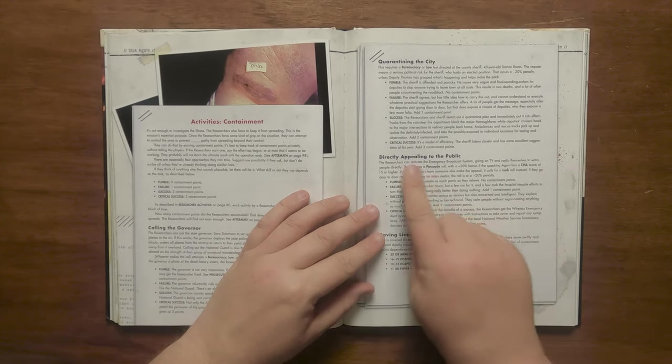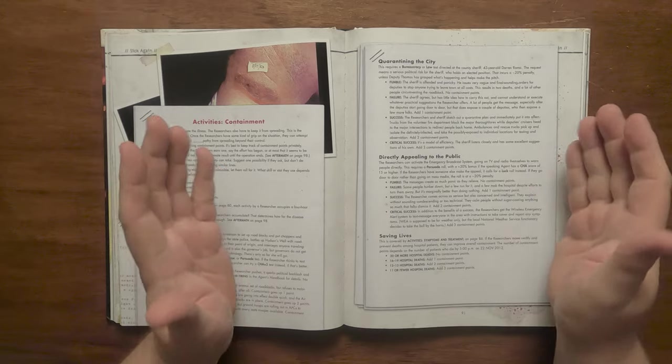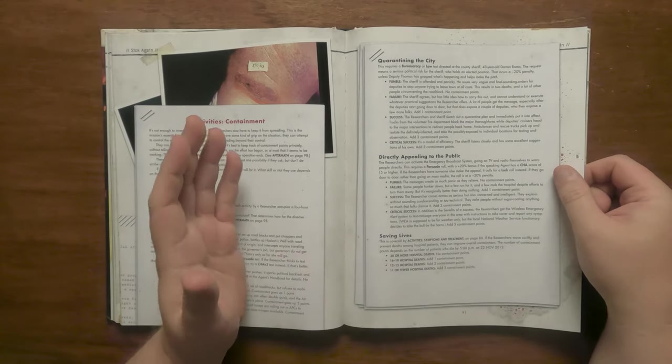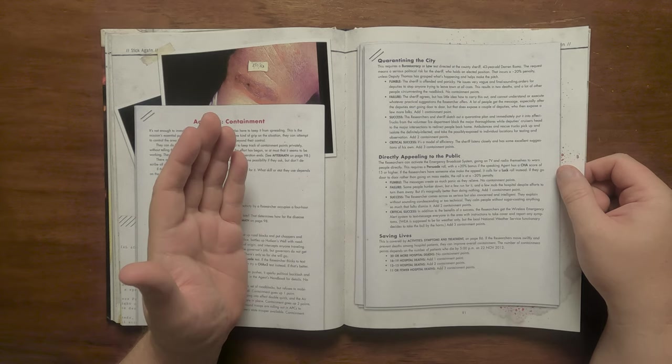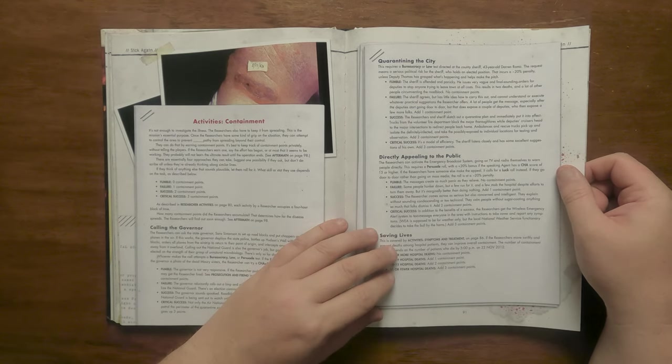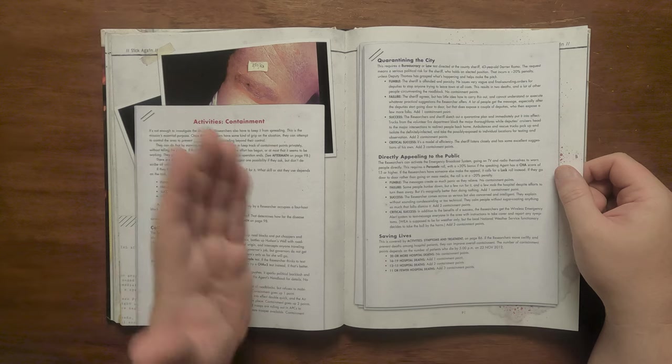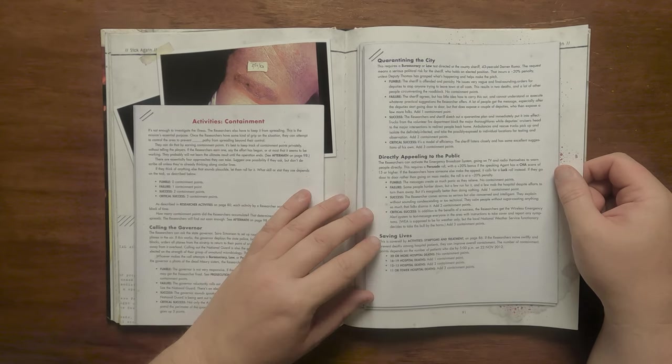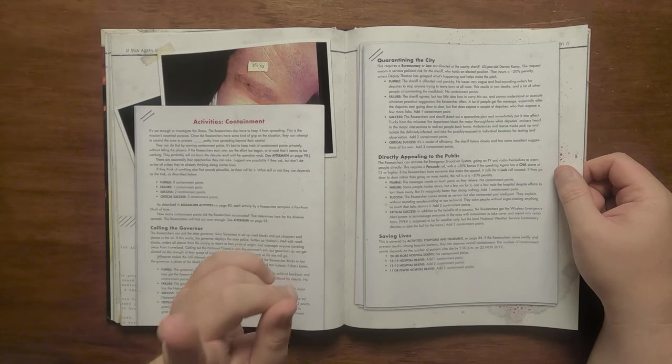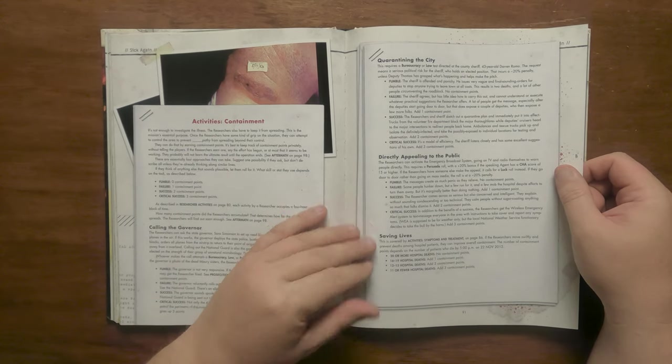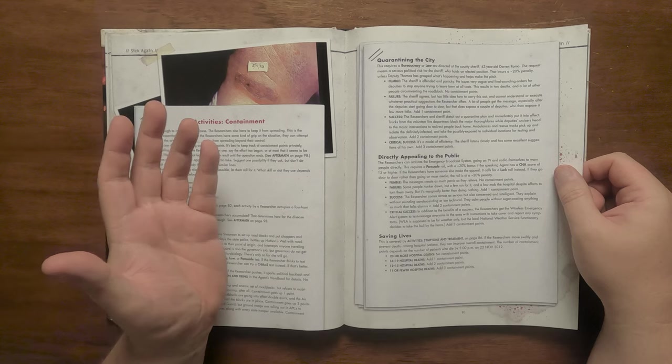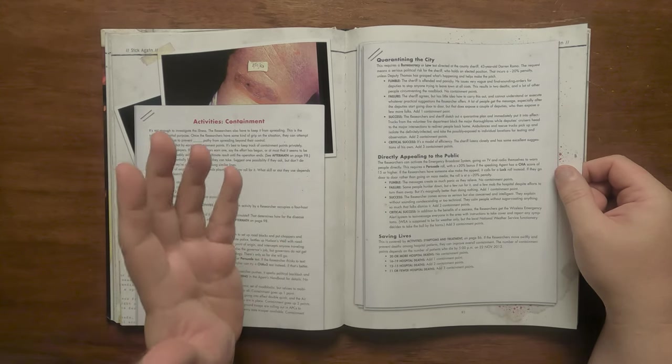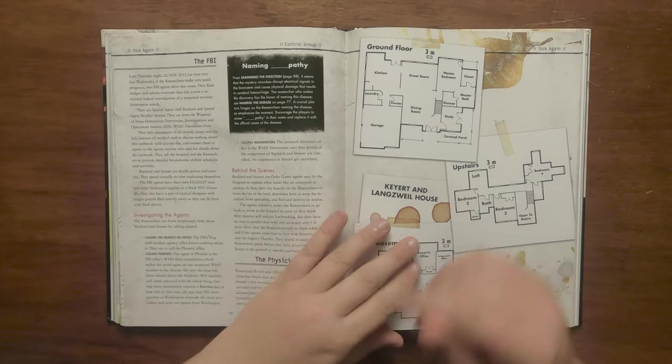The third is a direct appeal to the public. Hudson's Well has an emergency broadcast system, and everyone there can be warned. This requires a persuade roll with a bonus for those who have a high enough charisma. A fumble will cause mass panic, whereas a critical will get access to the wireless emergency system which will text everyone in the area. The final thing suggested is simply saving lives. This ranges from 20 plus deaths giving no points to 11 or fewer gaining 3. So with everything they can do as research is outlined, we move on to events that happen.